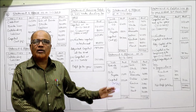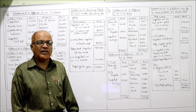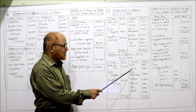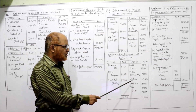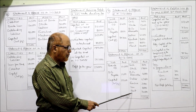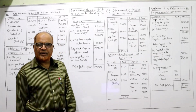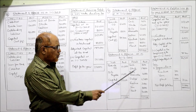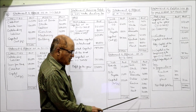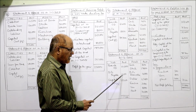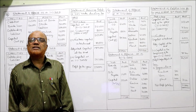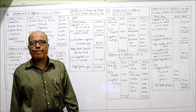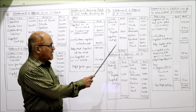Statement of affairs at end of year, 31st March 2005. Assets taken: cash, stock, bills receivable, debtors, furniture, van, and plant — all values from the problem. Two outside liabilities: bank overdraft and bills payable. Total assets: 1,15,300. Deduct 10,000 and 1,900. Closing capital is 1,03,400.